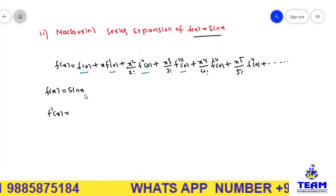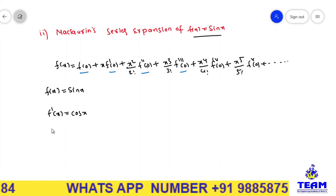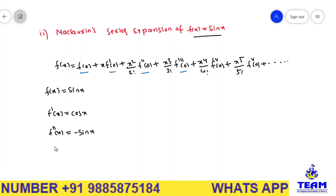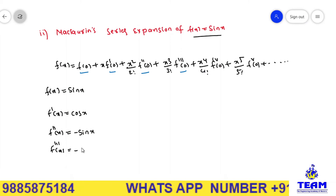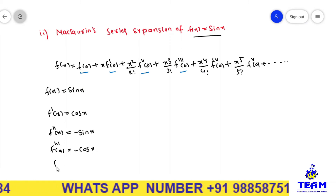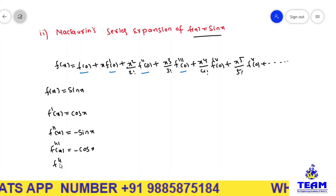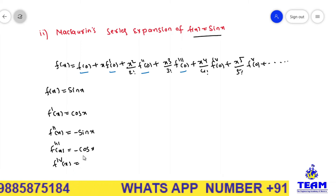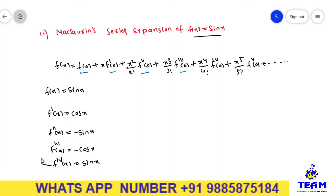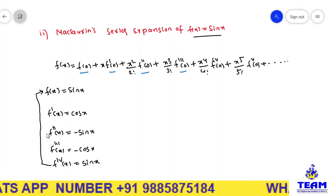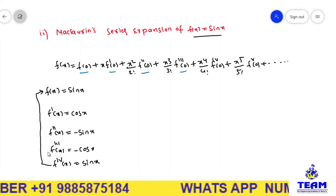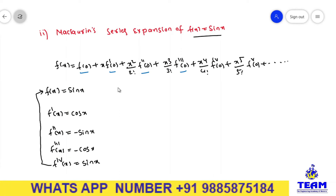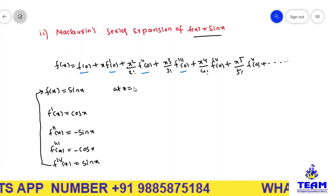The first derivative: f'(x) = cos(x). The second derivative: f''(x) = -sin(x). The third derivative: f'''(x) = -cos(x). The fourth derivative: f''''(x) = sin(x). Observe that the fourth derivative of f(x) equals f(x) itself, so the fifth derivative equals f'(x), and the sixth derivative equals f''(x).